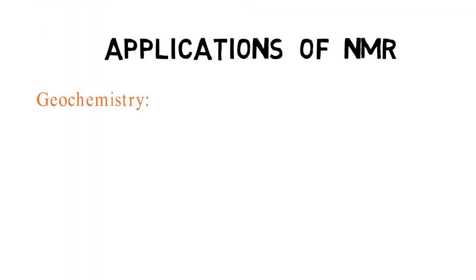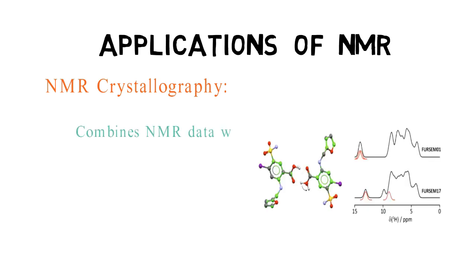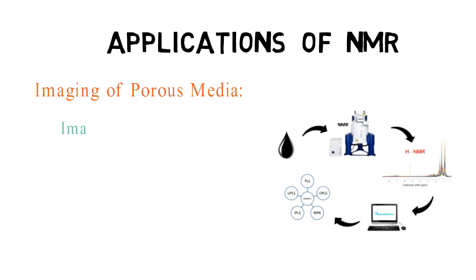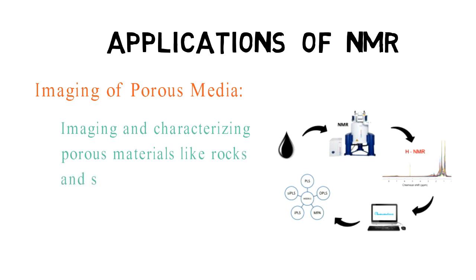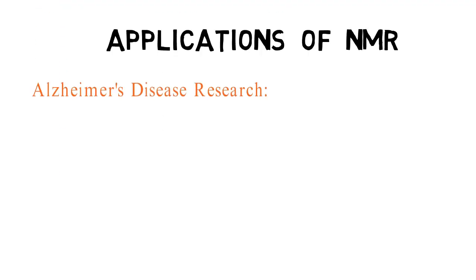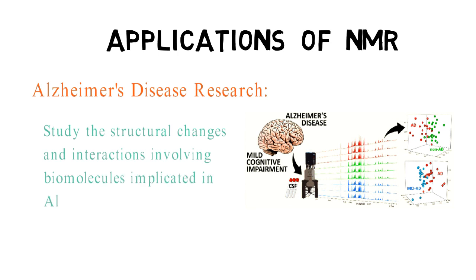NMR is applied in the study of geological materials, such as rocks and minerals, to understand their composition, structure, and environmental history. NMR crystallography combines NMR data with X-ray crystallography to obtain detailed structural information about crystalline materials. It is used for imaging and characterizing porous materials like rocks and soils, helping in applications related to oil exploration, groundwater studies, and soil science. This technique is also employed to study the structural changes and interactions involving biomolecules implicated in Alzheimer's disease, contributing to our understanding of its pathology.